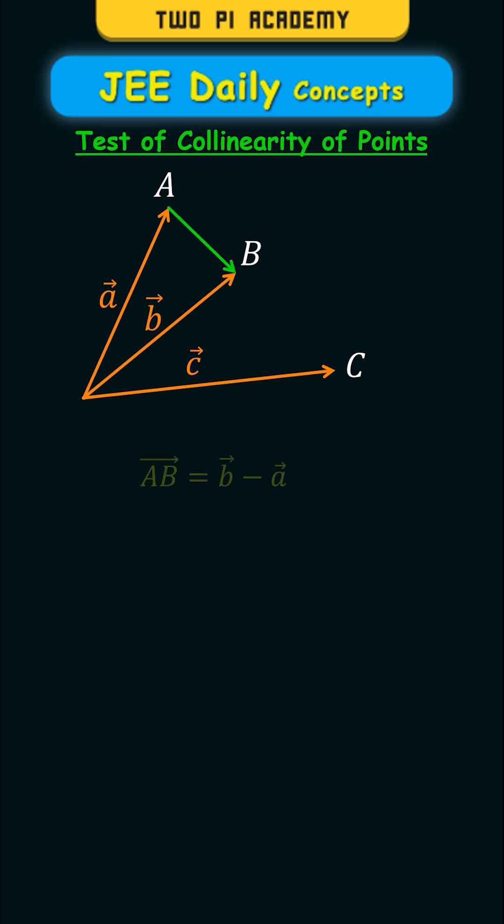So first, you'll calculate vector AB, which is nothing but vector B minus vector A, and if you are given the coordinates of the points, you can simply take the differences of the corresponding coordinates. And in a similar way, you'll calculate vector BC, which is nothing but vector C minus vector B.